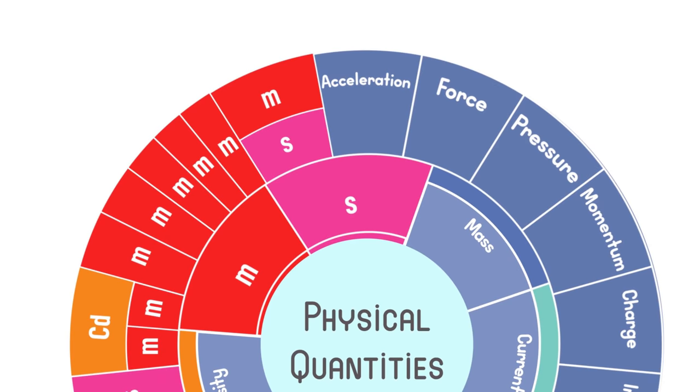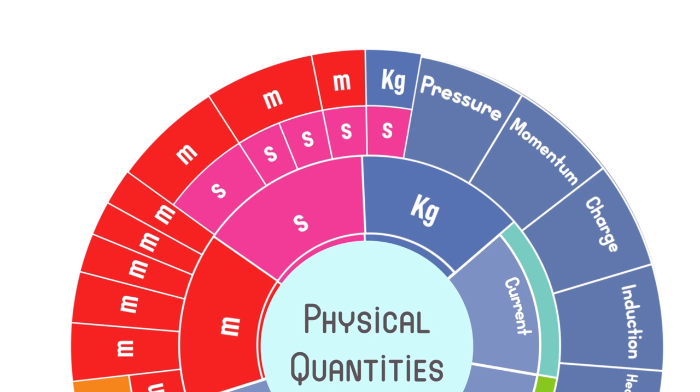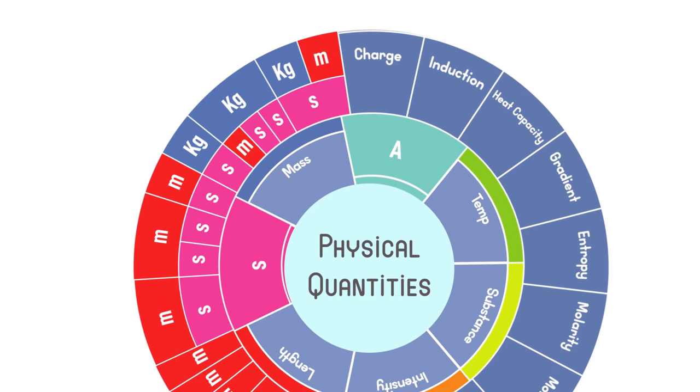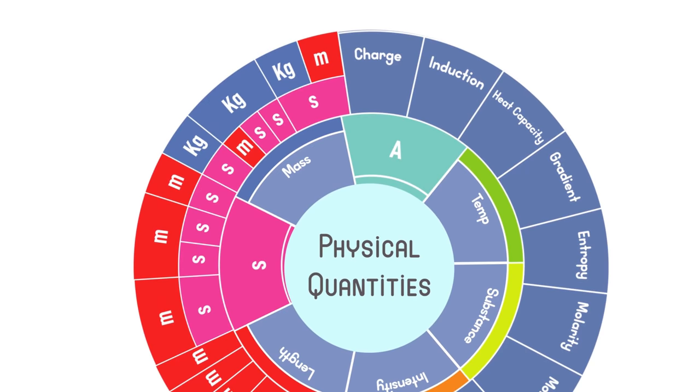Some derived units and their symbols are as follows. Velocity, which is measured in metre per second. Acceleration, measured in metre per second squared. Force, in metre kilogram per second squared, or termed as Newton. Pressure, in Pascal, or kilogram per metre second squared. Momentum, in metre kilogram per second. Charge, in coulomb or ampere second. And magnetic flux density, in Tesla, or kilogram per second squared ampere.